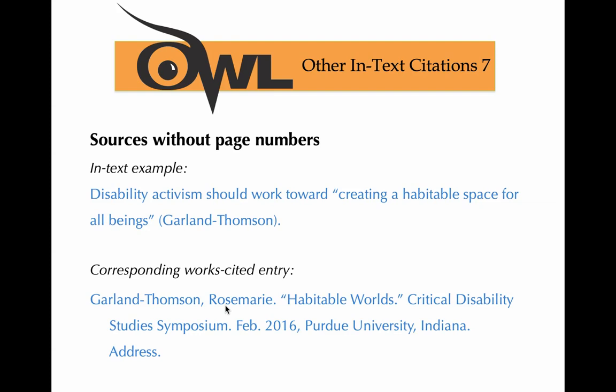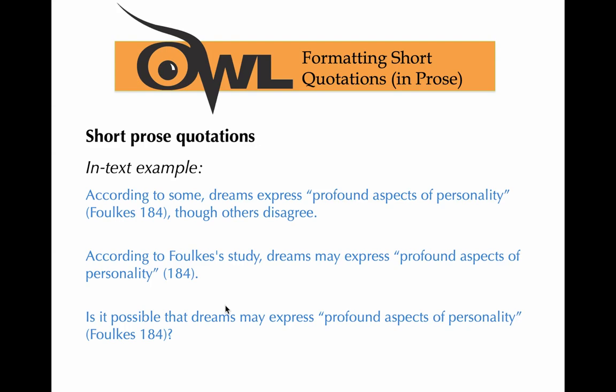If you have a source with no page number, you simply put the author's last name. Now, short quotations versus long quotations: a short quotation is something that doesn't go over about three lines of text. There are three correct ways to cite a short quotation — you can place the citation mid-sentence, at the end, or use the author's name as an introduction. The key with short quotations is using quotation marks to make it clear which words are yours and which belong to someone else.